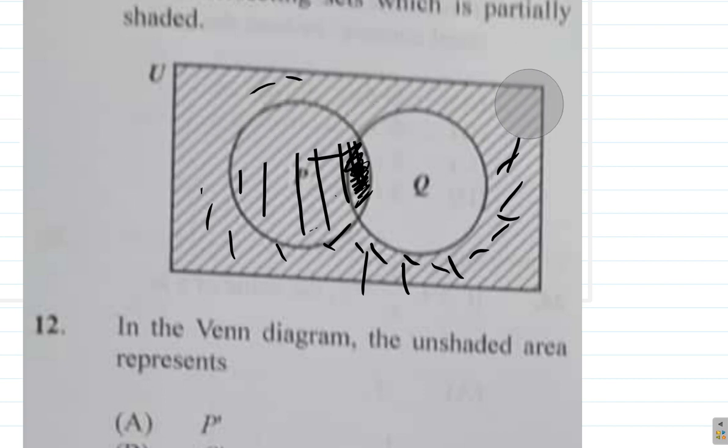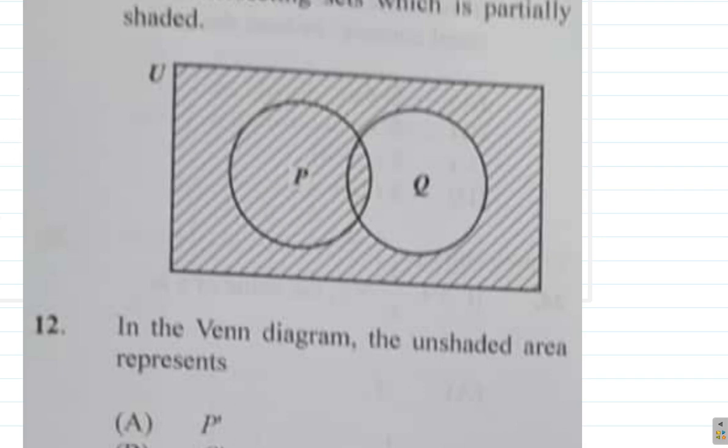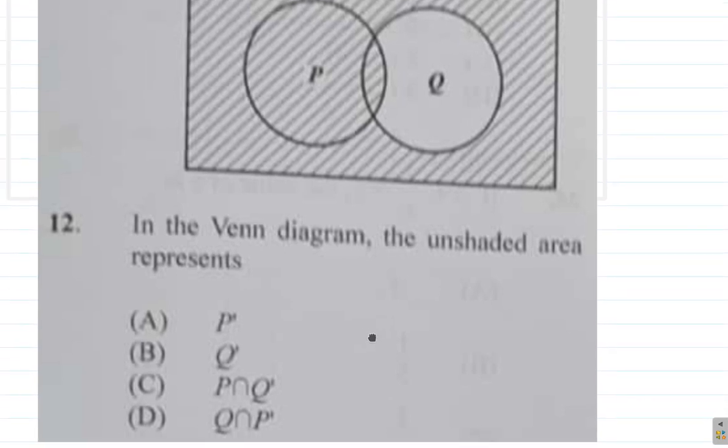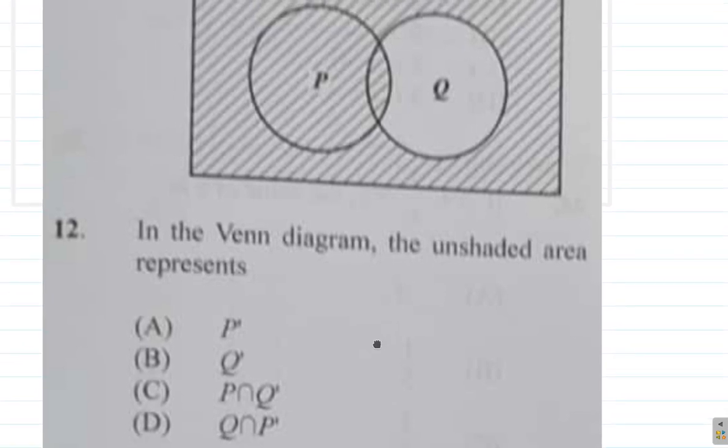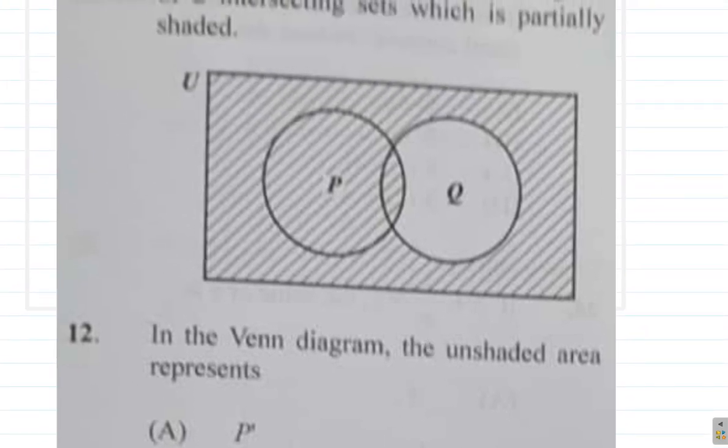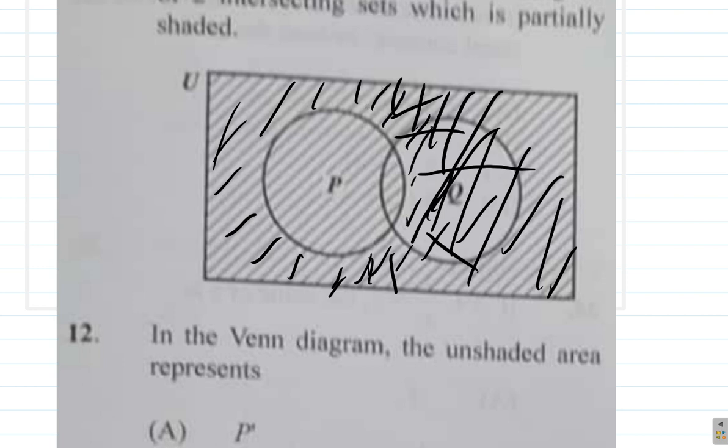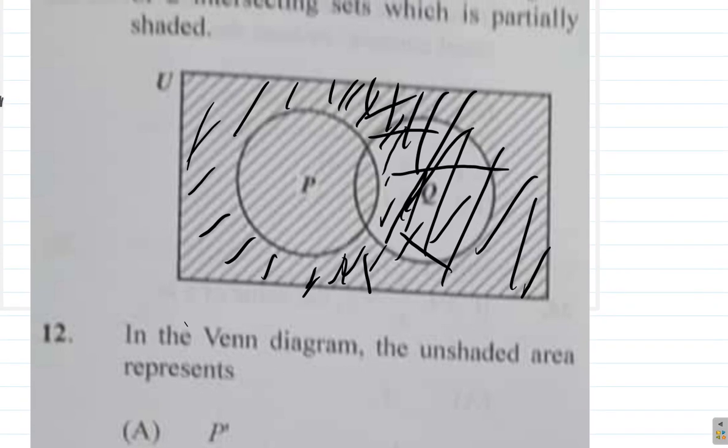It's not A, it's not B, it's not C. I wonder what else is left. Oh, hmm—D, this is something. Q intersect P complement. P complement would be all of these things here, all right. Are you looking for Q intersect that? Q intersect P complement would be all of here.